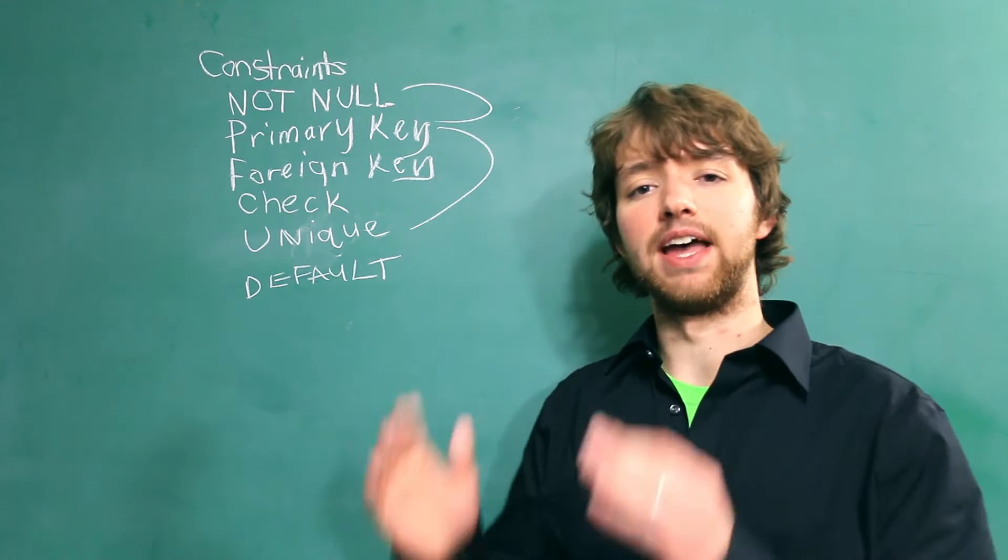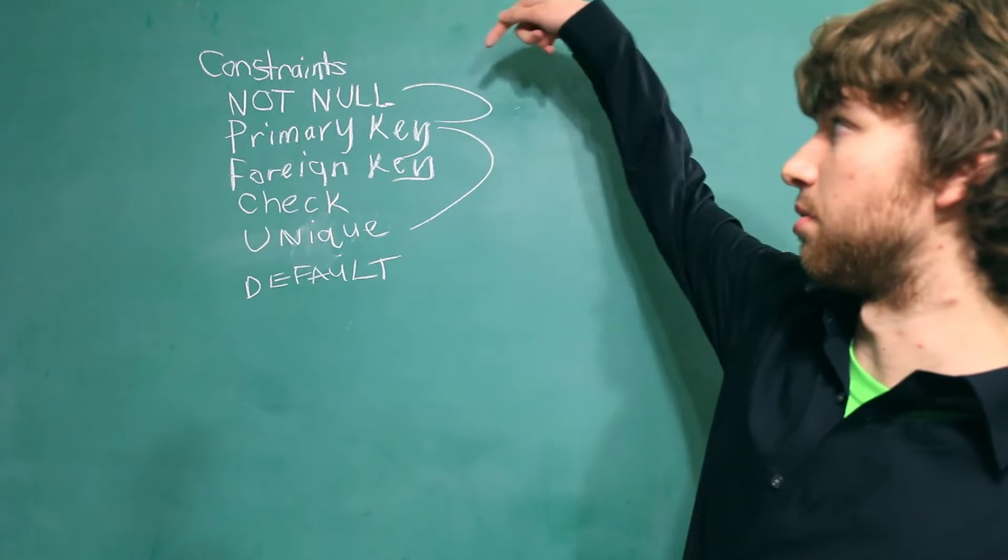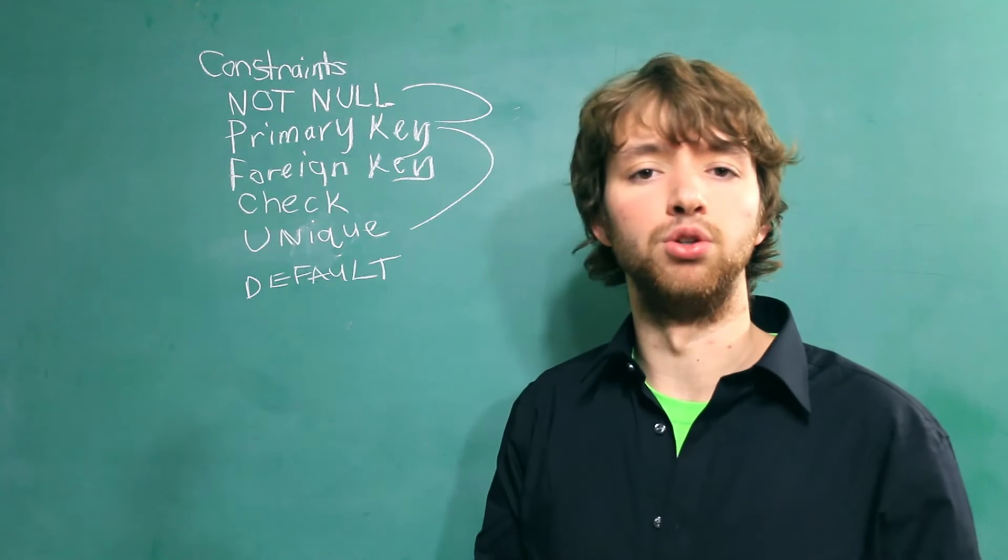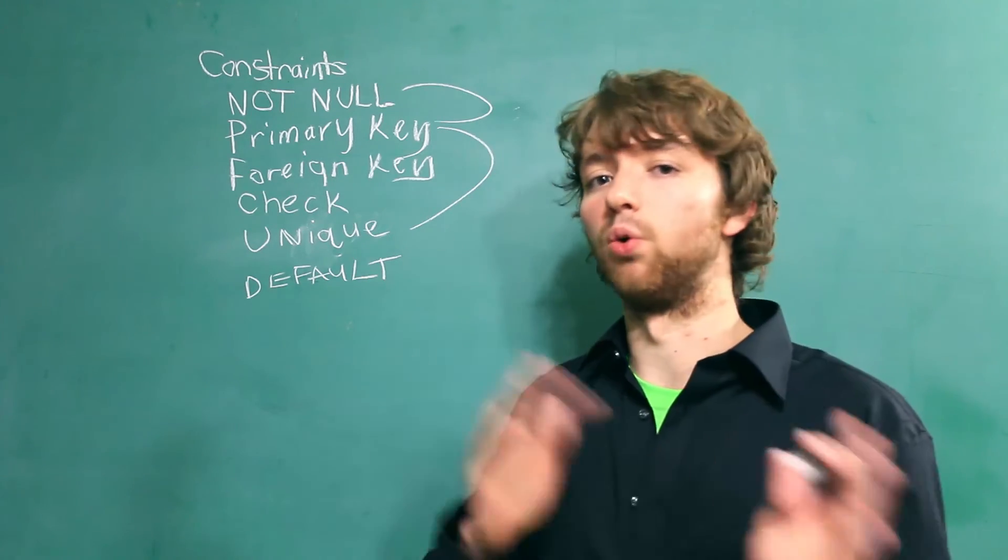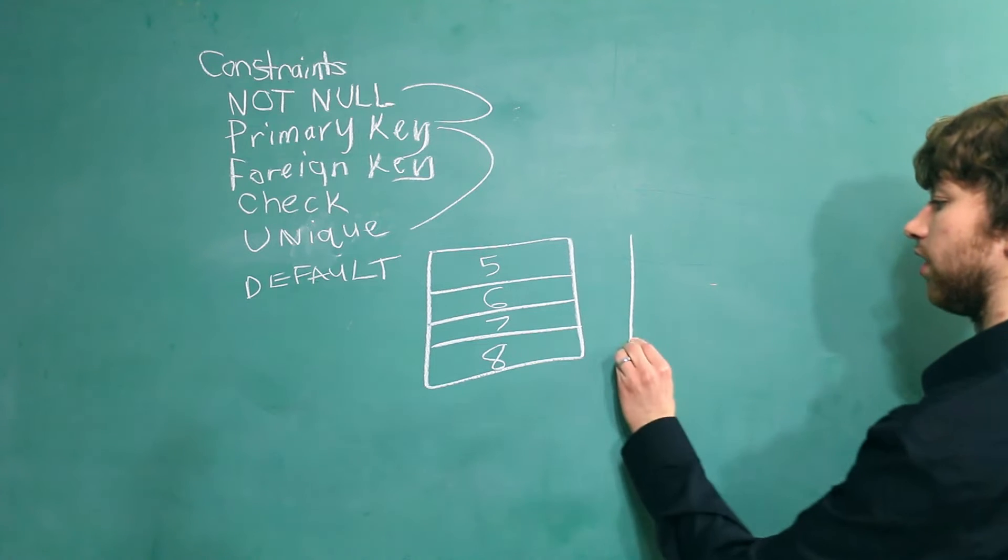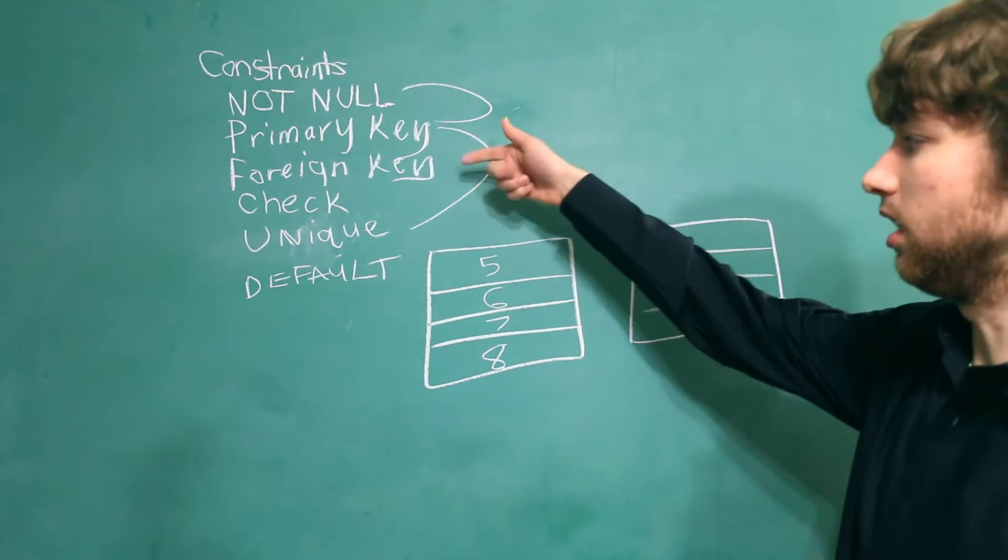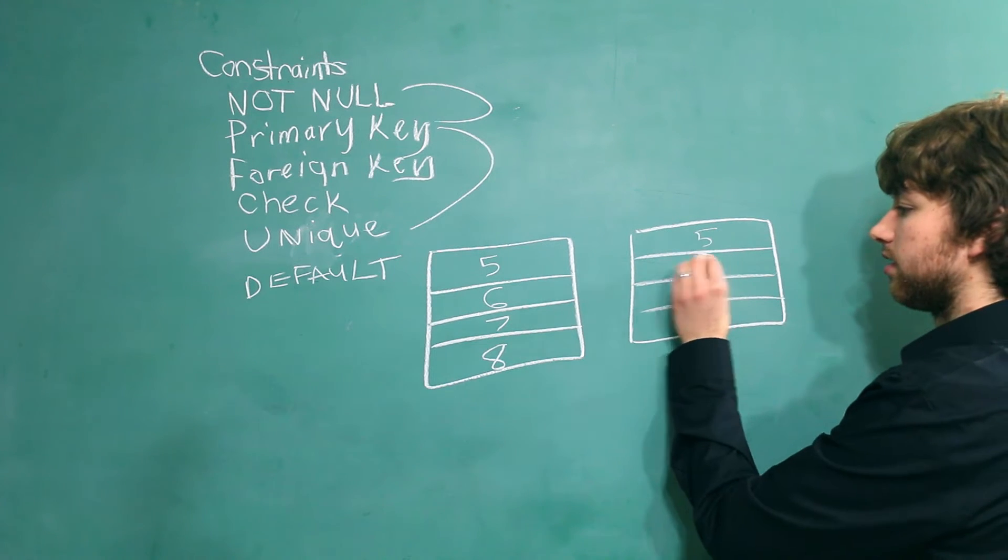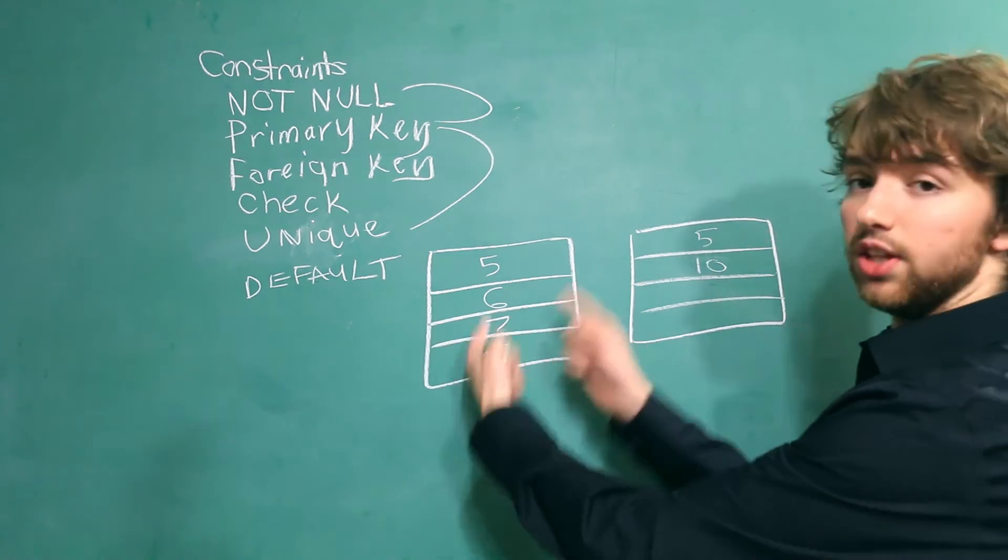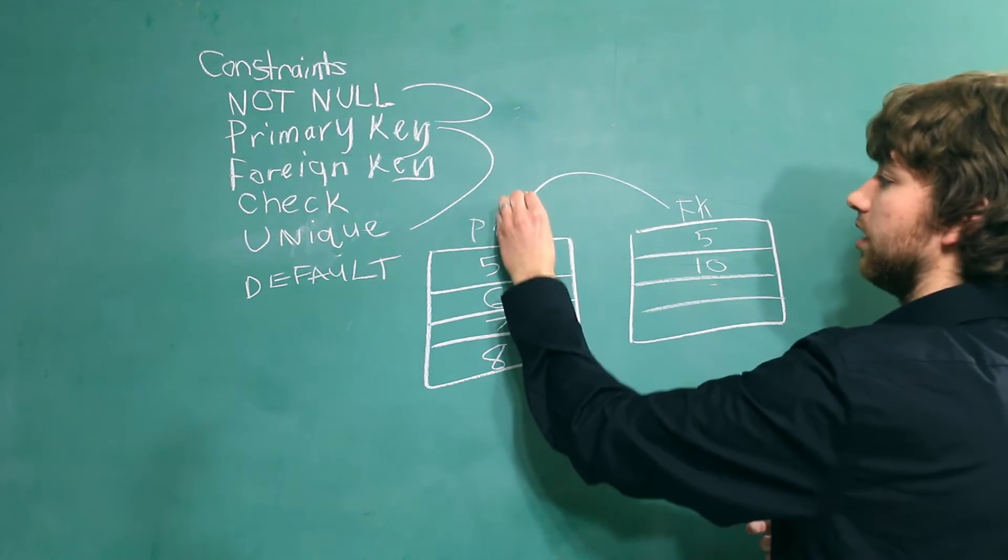The foreign key constraint tells the database that every value in this column has to match a value of another column. Often times the foreign key is going to reference the primary key. Meaning every single row in that column has to have a value that exists in another table's primary key. Or that table's primary key. So if you have this table and we have a couple values in it such as 5, 6, 7, 8. And over here we have another table. And we need to put data into this. But we label the column as a foreign key. That means the value 5 would be acceptable. 6, 7, and 8 would be acceptable. But if you put something like 10, that's unacceptable. That's because this value doesn't exist in the column that we're referencing. This would likely be the primary key. And this would be the foreign key that you would tell it to reference this column.